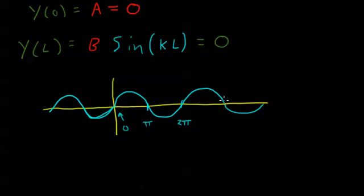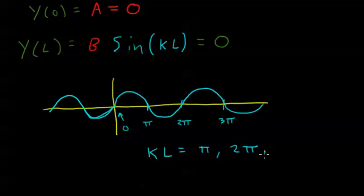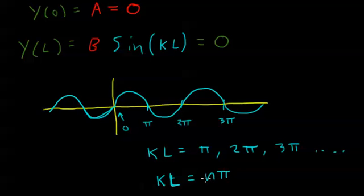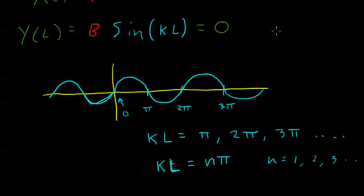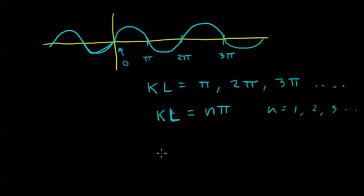So what can kL equal? As long as kL equals pi, that satisfies it. Or if it equals 2 pi, that satisfies the equation. Or 3 pi, and so on. So if kL equals n times pi, where n is some integer — n equals 1, 2, 3, et cetera — then this equation is satisfied. So we've found a requirement on k: dividing both sides by L, k equals n pi over L. This is an important result for our situation — we've found the allowed values of k.